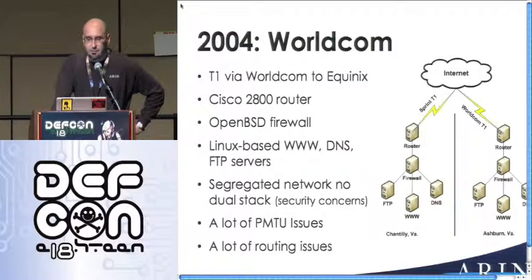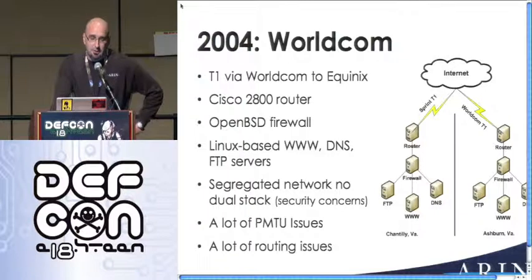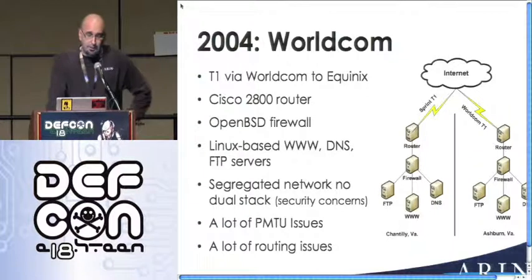This network was very similar to the Sprint one. The biggest difference is that we used a Cisco 2800 router this time — it just made more sense. We ended up going back later and replacing the Linux box with a Cisco router as well, after the Linux box died. We stuck with OpenBSD. Still a segregated network — we were really worried about security issues, people compromising V6 or bringing down hosts and causing problems on our V4 network. Still had a lot of path MTU discovery issues and routing issues.